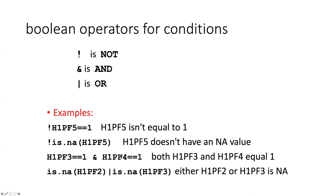We can also do even more complicated things. Like, we can say if either H1PF2 is an NA or if H1PF3 is an NA. So this is actually evaluating three conditions: first, is H1PF2 an NA? Second, is H1PF3 an NA? And then the third thing is whether one or the other of them evaluates as true.